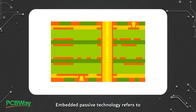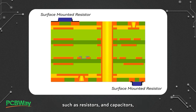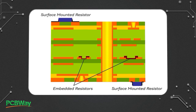Embedded Passive Technology refers to the process of integrating passive components such as resistors and capacitors directly onto the inner layers of a PCB during the manufacturing process.